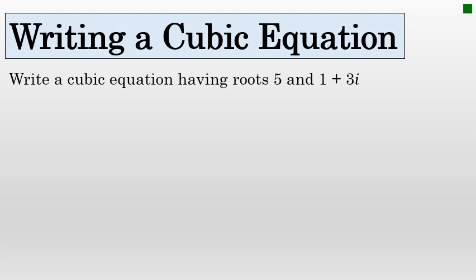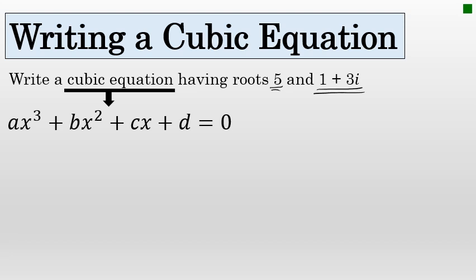In this problem, we are being asked to write a cubic equation having roots 5 and 1 plus 3i. Whenever you are asked to write a cubic equation, that equation will have the form ax³ plus bx² plus cx plus d equals zero. We're going to write a polynomial third-degree equation that is equal to zero.